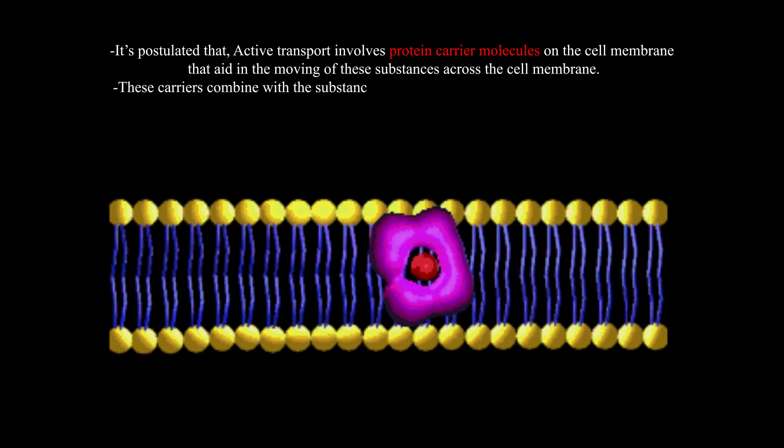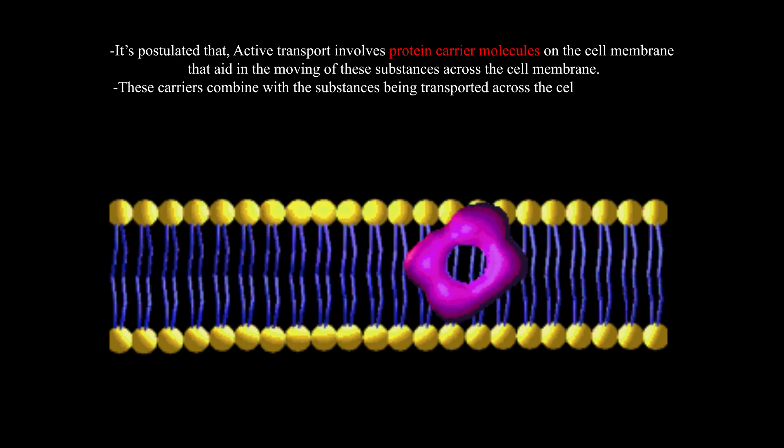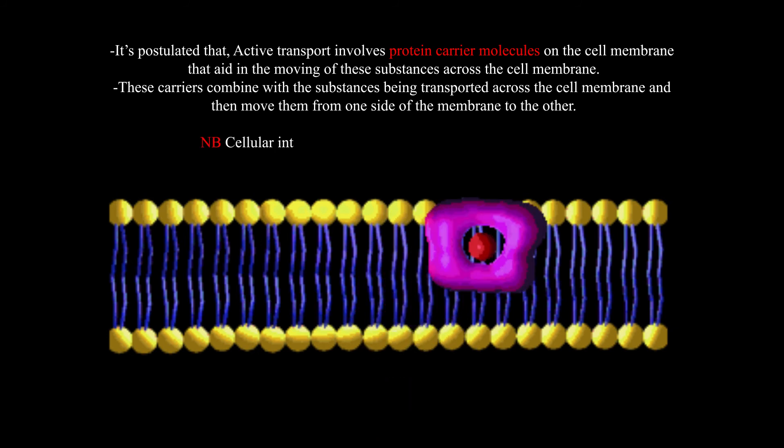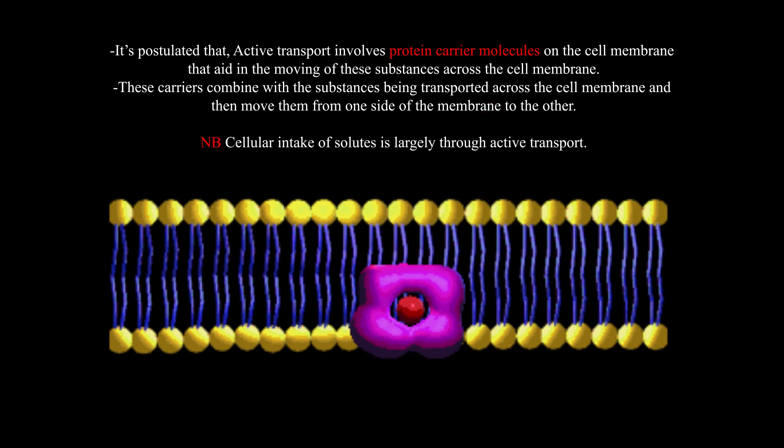These carriers combine with the substances being transported across the cell membrane and then move them from one side of the membrane to the other. N.B. Cellular intake of solutes is largely through active transport.